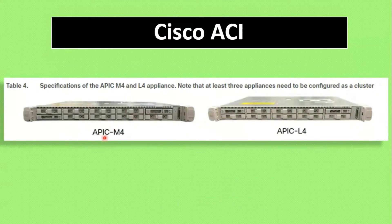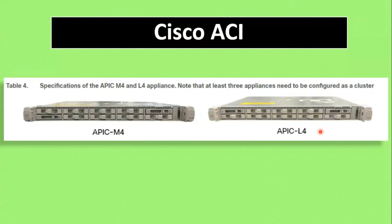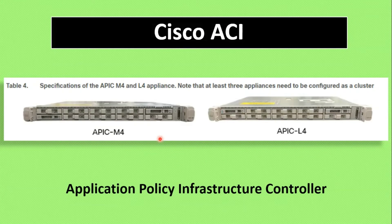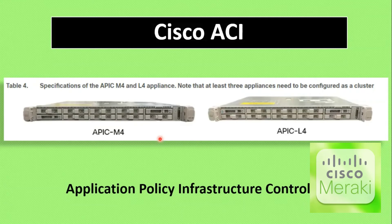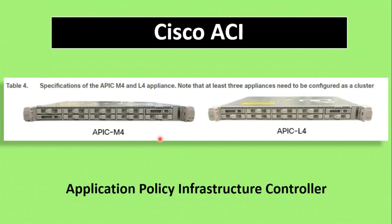Here we are going to see Cisco ACI. ACI stands for Application Centric Infrastructure. We have two types of appliance in Cisco ACI: APIC M4 and APIC L4 — M stands for medium and L stands for large. APIC stands for Application Policy Infrastructure Controller. Nexus 9000 platform devices like Nexus 9200 can also be used as an ACI solution. ACI also interacts with Cisco DNA Center and the SD-WAN solution. Cisco is majorly playing with the SD-WAN solution — Cisco Meraki and Cisco Viptela. A video on Cisco Meraki is available on our YouTube channel.